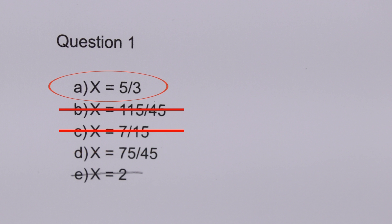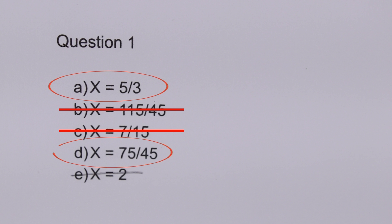The first reason is that D — 75 over 45 — is just the unsimplified version of A, 5 over 3. So if the question is asking you to solve a fraction, students who forget to simplify would choose D, getting it wrong. So if the test maker wants students who remember to simplify to get it right and students who forget to get it wrong, A is the perfect answer.